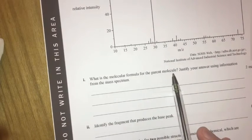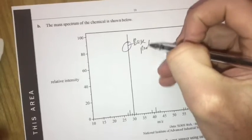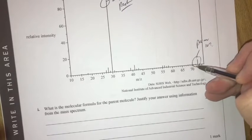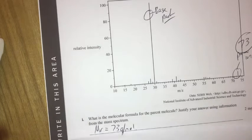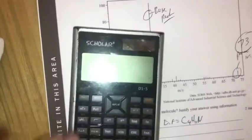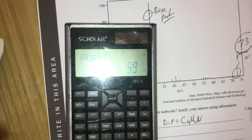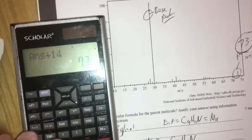Now: what is the molecular formula for the parent molecule? Using the mass spectrum, the parent ion is at 73, so the molar mass equals 73 g/mol. We need our empirical formula to add up to 73. For C4H11N: 12×4 = 48, plus 11 for hydrogen, plus 14 for nitrogen — that equals 73, which matches our molar mass.